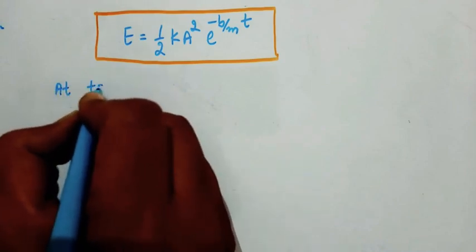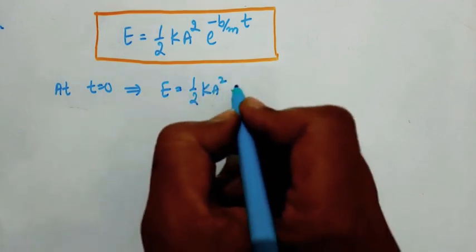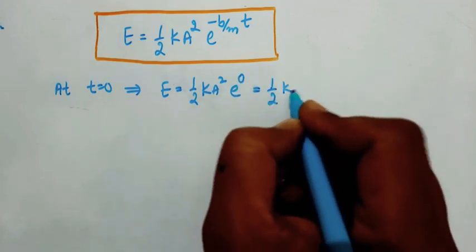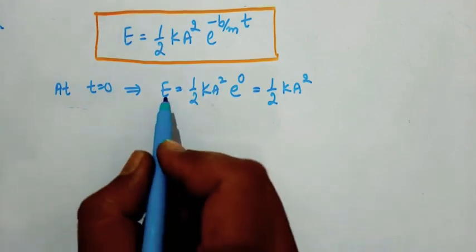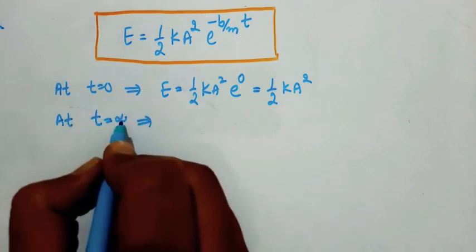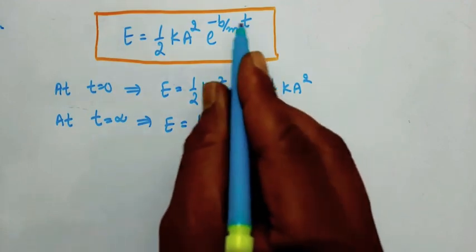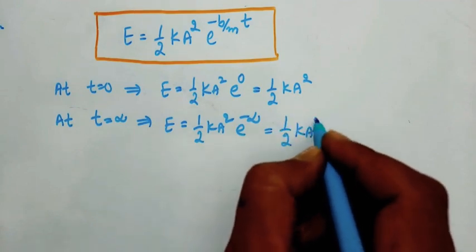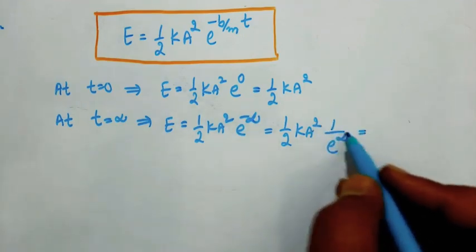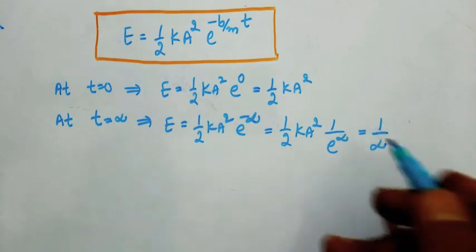At t equals 0, the total energy is half k A squared, since e to the power of minus B/M into 0 equals e to the power of 0 equals 1, so that is half k A squared. When time tends to infinite, energy is half k A squared times e to the power of minus infinity. Since e to the power of minus infinity equals 1 over e to the power of infinity, which is infinity, something divided by infinity is 0. So when time tends to infinity, energy tends to 0.